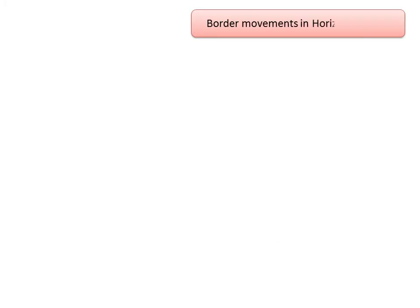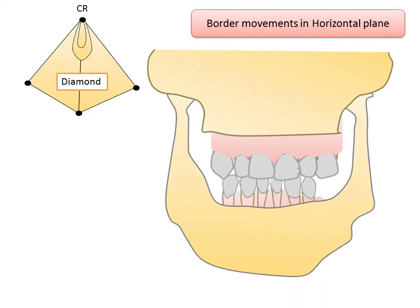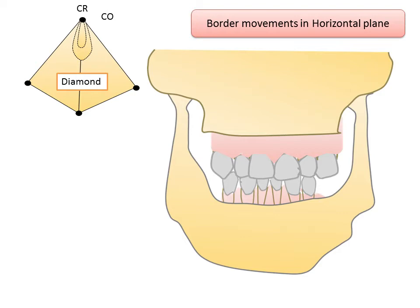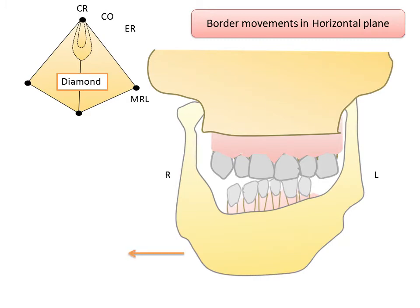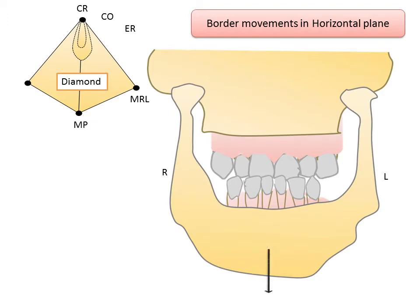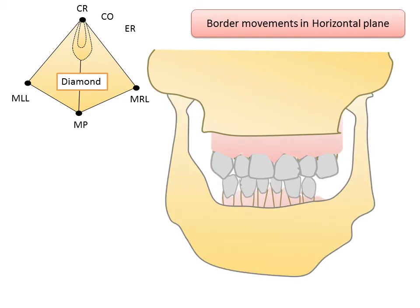Border movements recorded in the horizontal plane produce a characteristic diamond tracing. The patient is first instructed to move the mandible to the centric relation position and then to centric occlusion. Centric relation is a relation of the TMJ, whereas centric occlusion is the occlusion of the teeth when the mandible is in centric relation. The patient then brings the mandible forward to an edge-to-edge relationship guided by incisal guidance, then moves to the maximum right lateral position, then to maximum protrusion, then to maximum left lateral position, and gradually returns to the centric position. An arrow point tracing formed using gothic arch tracers in a pantograph will coincide with this diamond shape.